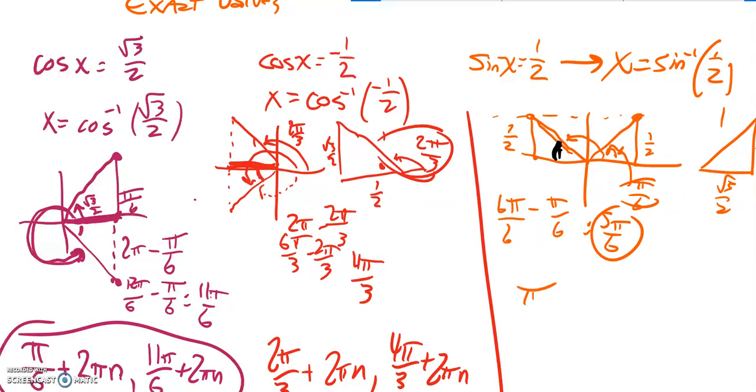So there's my angles. One of them is pi over 6 plus the period. The other one is 5 pi over 6 plus the period. Thank you.